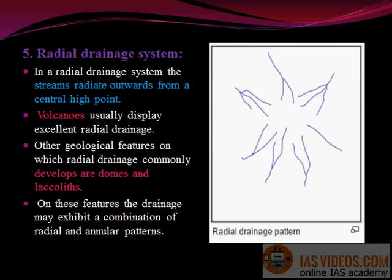Radial drainage system: In a radial drainage system, the streams radiate outwards from a central high point. Volcanoes usually display excellent radial drainage. Other geological features on which radial drainage commonly develops are domes and lopoliths. On these features, the drainage may exhibit a combination of radial and annular patterns.